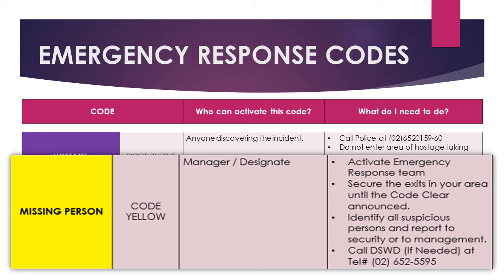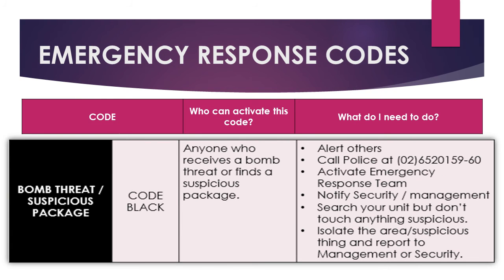Call DSWD if needed at telephone number 652-5595. Code Black: Bomb threat or suspicious package. Who can activate this code? Anyone who receives a bomb threat or finds a suspicious package. What do I need to do? Alert others. Call police at 6520-159-260. Activate the emergency response team. Notify security and management. Search your unit but don't touch anything suspicious. Isolate the area and suspicious items, and report to management or security.